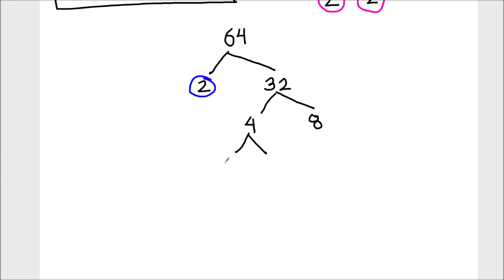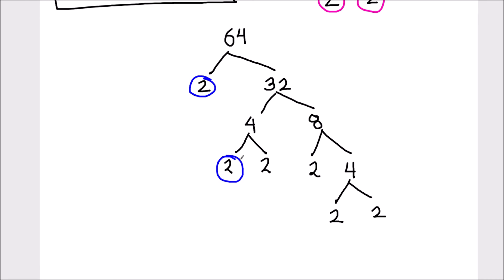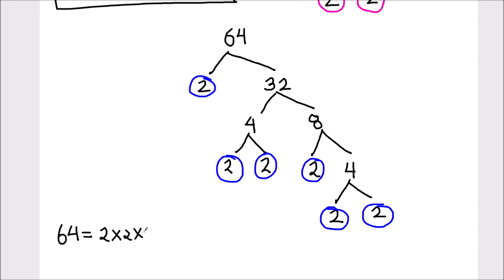4 can be divided into 2 factors: 2 times 2. And 8 can also be divided into 2 factors. Now we are going to circle all the prime factors — 2, 2, 2, and 2 — which cannot be further divided. This is another way of making a factor tree for number 64. The prime factors of 64 are 2 times 2 times 2 times 2 times 2 times 2. These are all the factors of number 64.